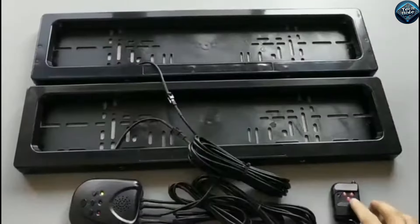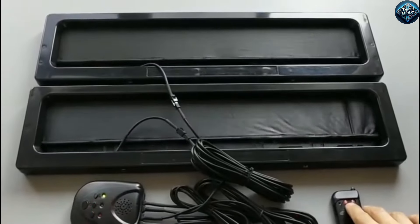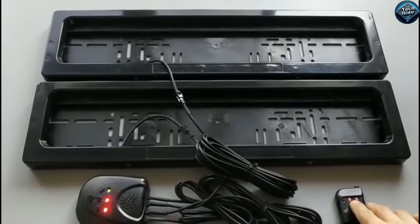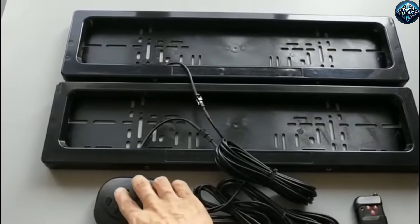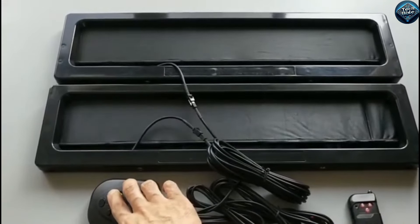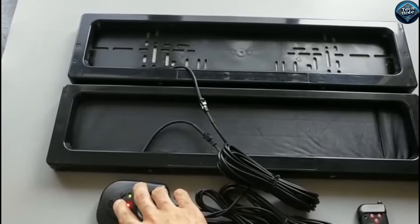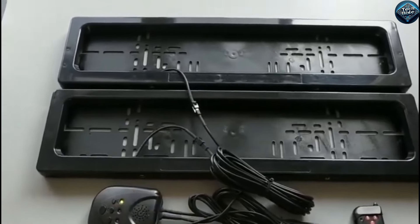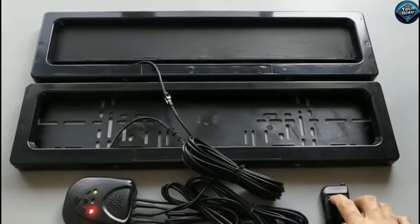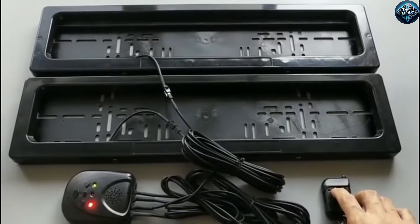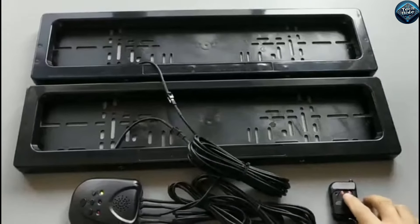The license plate hider is a controversial gadget that allows drivers to conceal their license plates at the push of a button, often to avoid detection by traffic cameras or tolls. This device can be particularly appealing to those seeking to evade fines or surveillance, but it is illegal in many regions due to the potential for misuse.